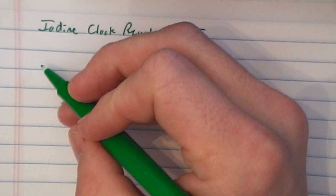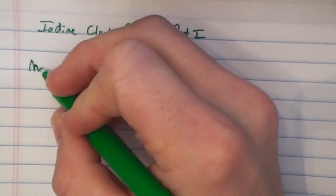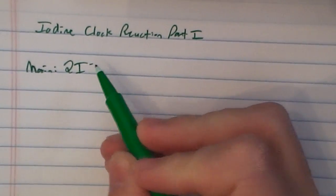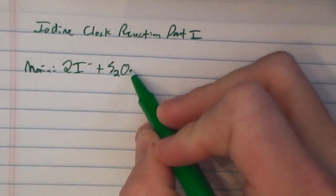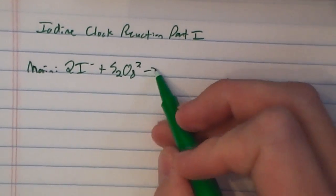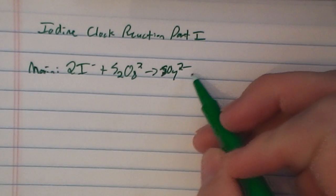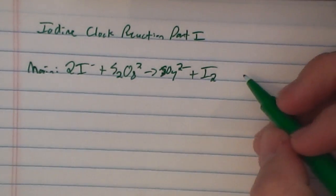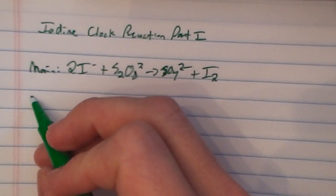The main reaction is going to involve iodide ions — you can follow this in your lab introduction as we go through it. The iodide ions will react with persulfate ions and form two products. One of the products formed is iodine, and that iodine will then go into the secondary reaction, which is called the clock reaction.